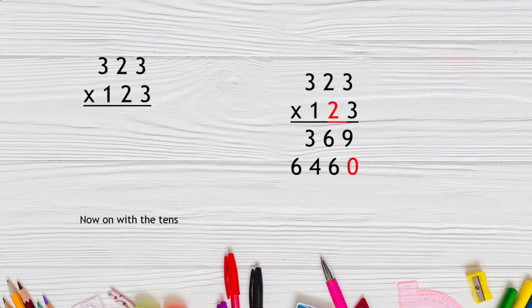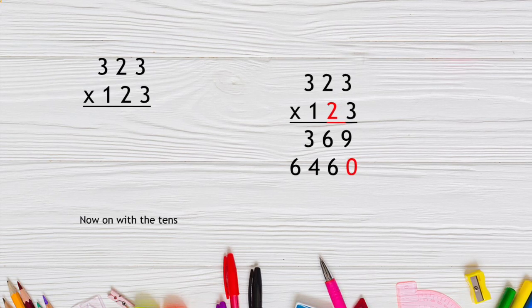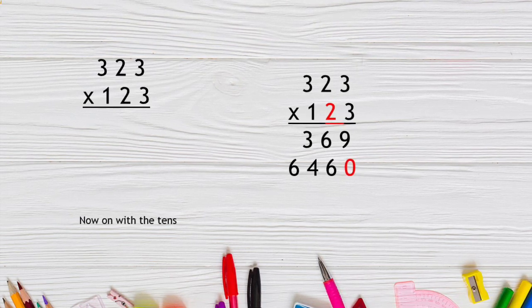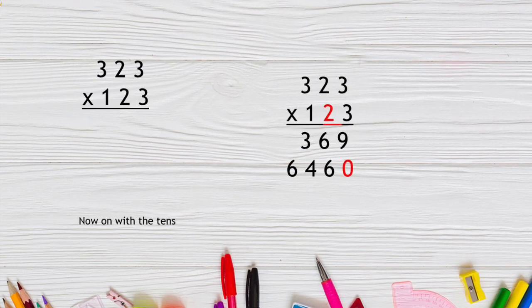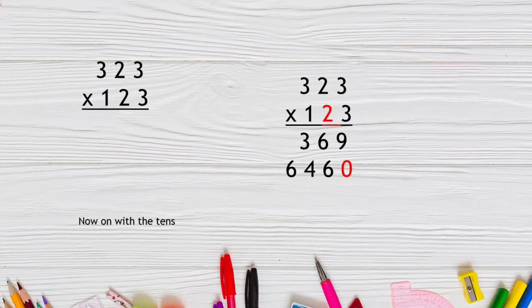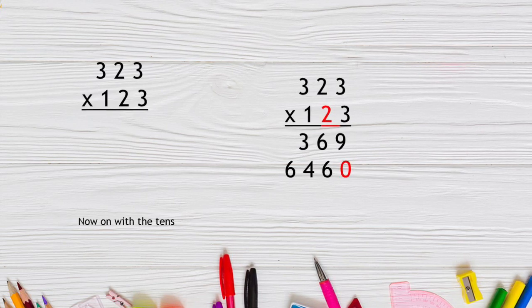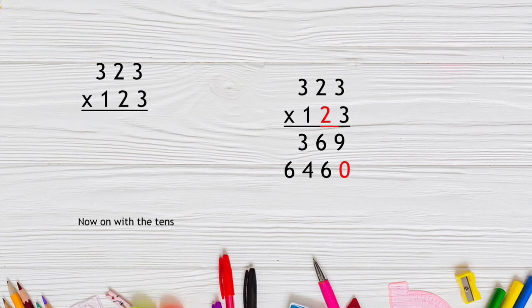In this case, we're taking 20 times 323. You put the zero down in the product, and then you take 20 times 3 is 60, 20 times 20 is 400, and 20 times 300 would be 6,000 for 6,460.